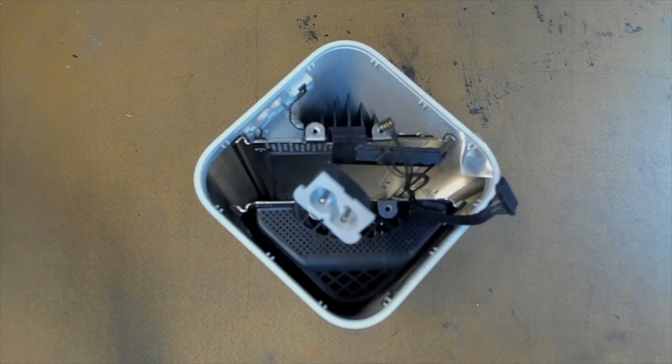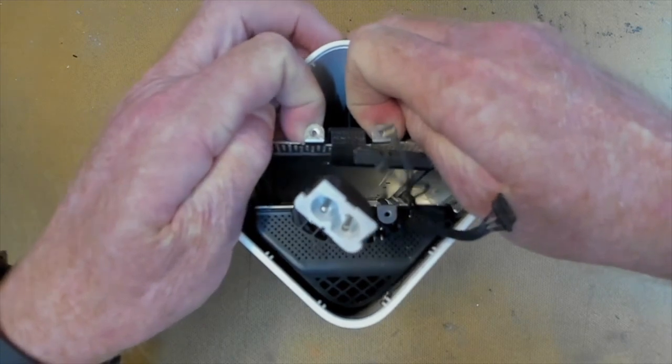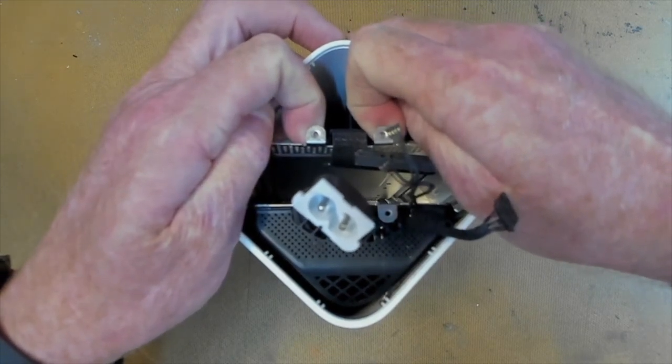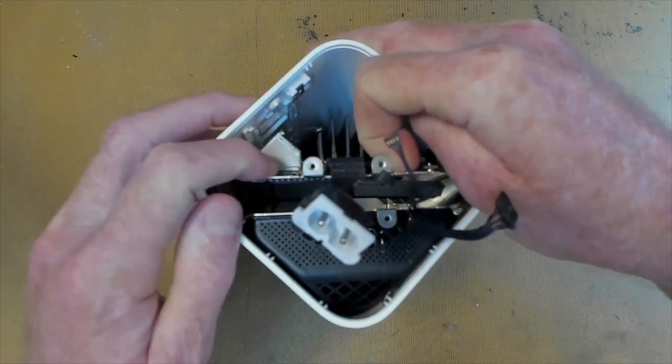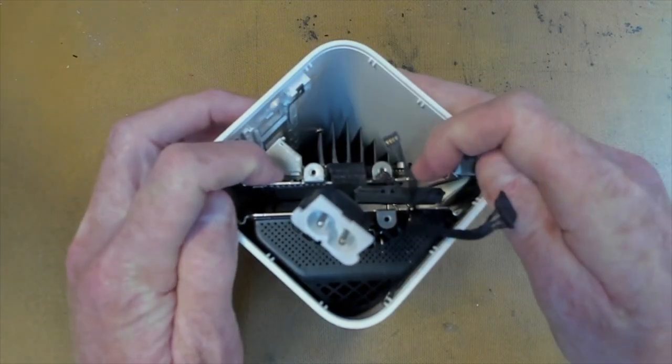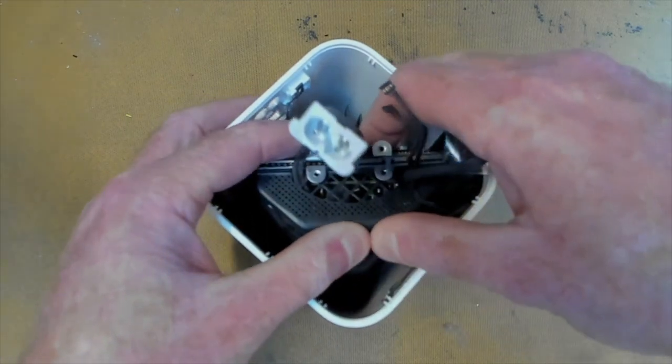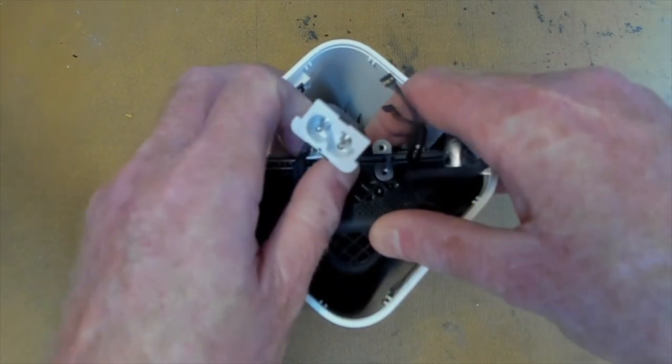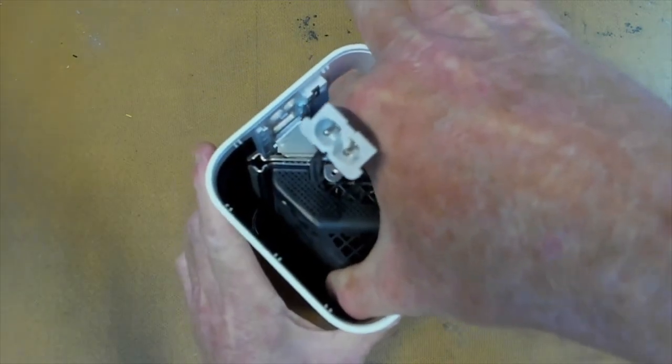Then what we do is we get our two fingers and then we put them under the tabs here and then we just lift it up ever so slightly to break it away and then that pushes into the inside like this. Then we pinch, and the whole guts of the Apple Time Capsule should slide straight out.